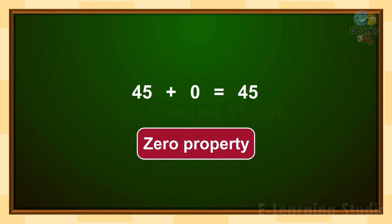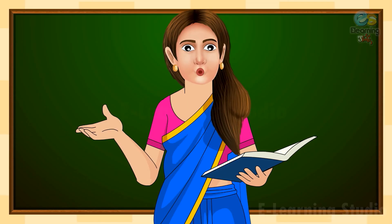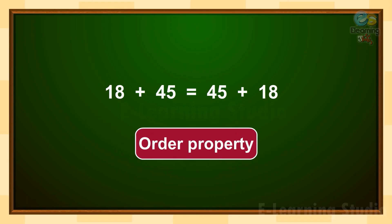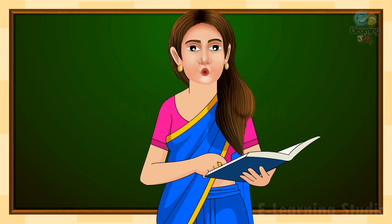Next, we have 18 plus 45 is equal to 45 plus 18. What do you think? Which property is used here? Kids, if you say Order Property of addition, then you are absolutely correct. Very good kids, because we change here the order of the addends.